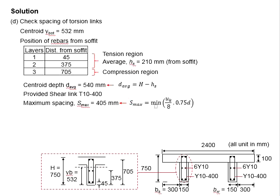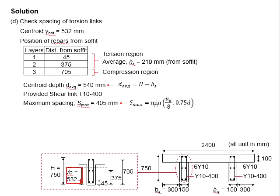Therefore, we need to first identify the location of the centroid. Based on the previous example and the geometrical property analysis, the centroid of the section is found to be 532 mm from the soffit of the beam, as indicated here. Next, we need to determine the exact locations of the longitudinal steel bars.